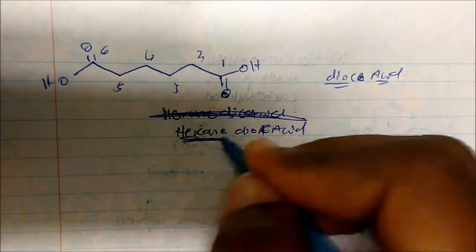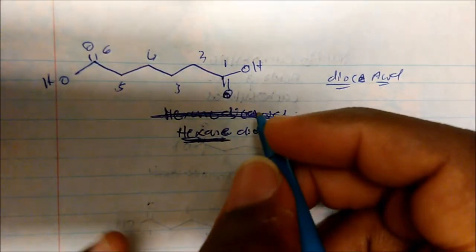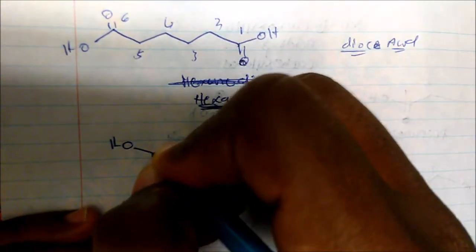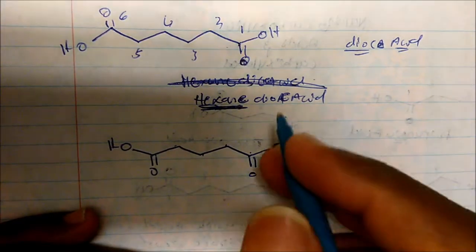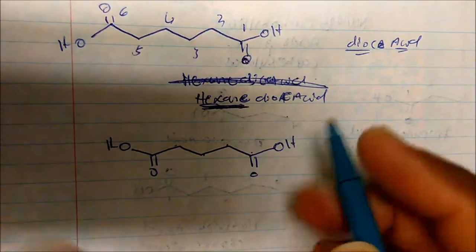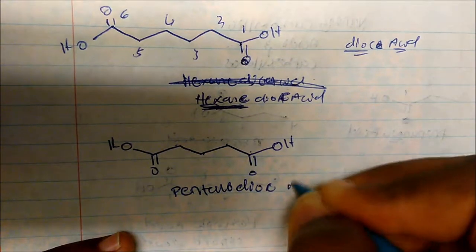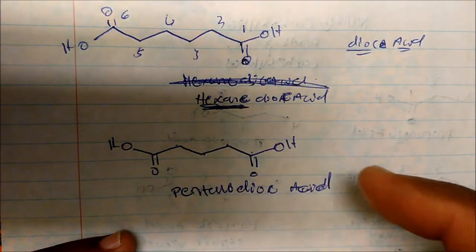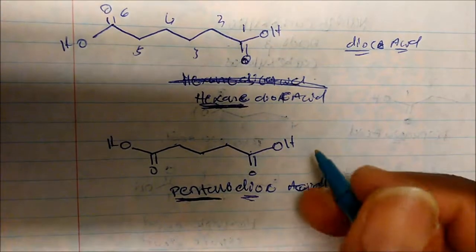Notice that I named the alkane-like structure. Whenever we deal with dicarboxylic acids, you name the alkane-like name and then add '-dioic acid' at the end. For another example with five carbons — we know this would be pentanoic acid if it had one carboxylic acid group — but because it has two, this is pentanedioic acid. Likewise, with only four carbons it would be butanedioic acid.